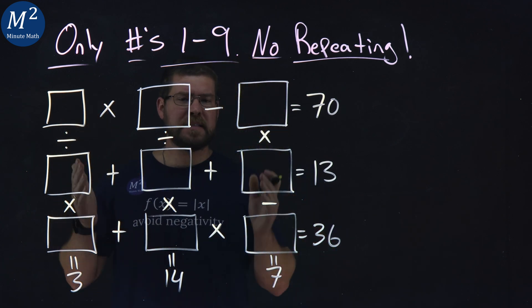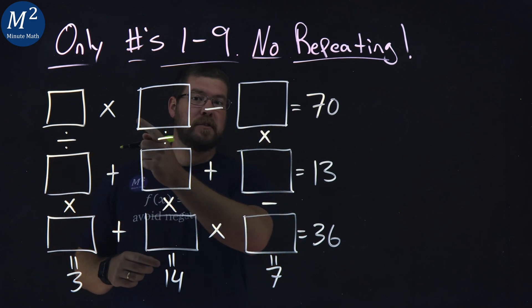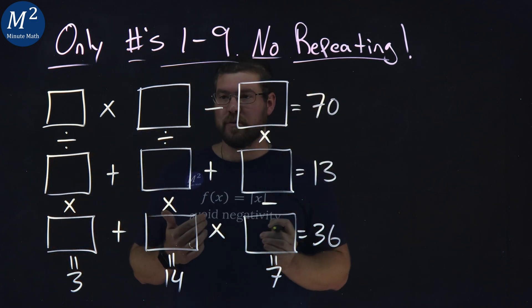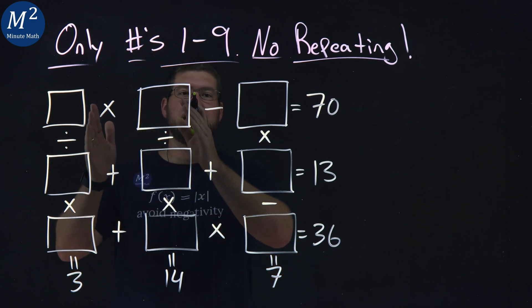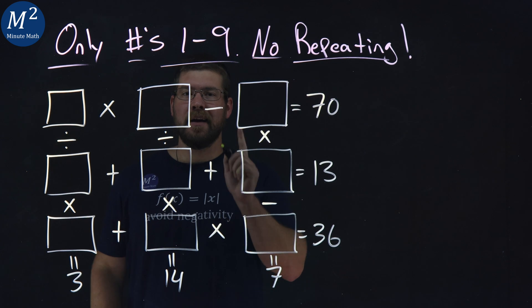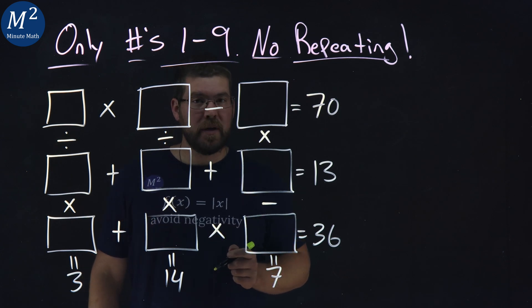We have nine boxes here, and we have some operations that go along to equal certain numbers. We want to fill in our missing boxes with numbers just one through nine, and no number can repeat.